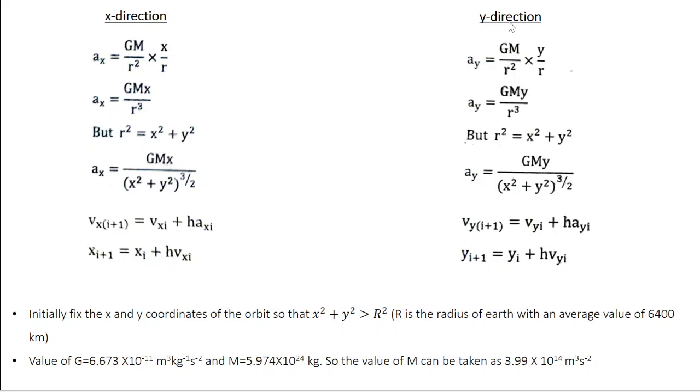Same way in the y direction, Ay = GM/R² into the y component divided by magnitude. So this is GMy/R³ or GMy/(x² + y²)^(3/2).